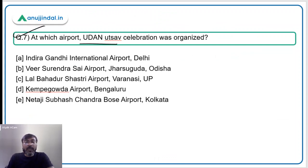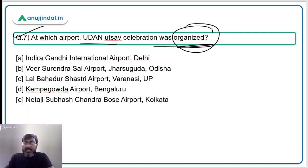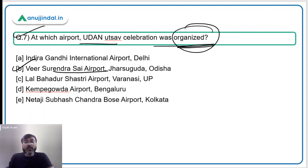Question number 7: at which airport was the Udaan celebration organized? This is a direct question likely to be asked as a single-mark question. The Udaan celebration was organized at Veer Surendrasai Airport, which is in Jharsuguda, Odisha. Option B is the correct answer.